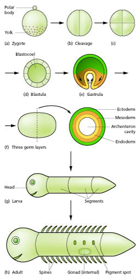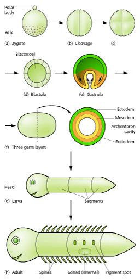The main processes involved in the embryonic development of animals are regional specification, morphogenesis, cell differentiation, growth, and the overall control of timing explored in evolutionary developmental biology.